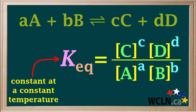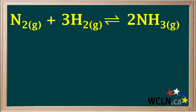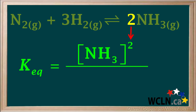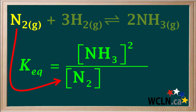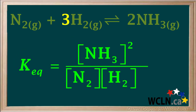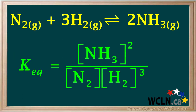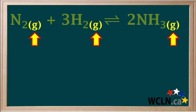Let's do a couple of examples with real chemical reactions. The reaction of nitrogen gas and hydrogen gas to form ammonia is represented by this equilibrium equation. We start by writing the concentration of the product NH₃ in the numerator. Its coefficient 2 becomes the exponent of NH₃ in the Keq expression. Next, we write the concentration of reactant N₂ in the denominator. It has a coefficient of 1, so we don't include an exponent. Then we write the concentration of reactant H₂ beside N₂ in the denominator, and the coefficient 3 is written as the exponent of H₂. Notice that in this equilibrium equation, all of the species are gases.